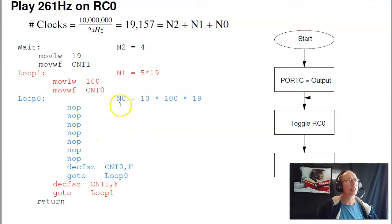So the total number of clocks is the blue loop, 10 times 100 times 19, plus the red code, four lines of code, plus one for go to, five times 19, plus the black code, four instructions.